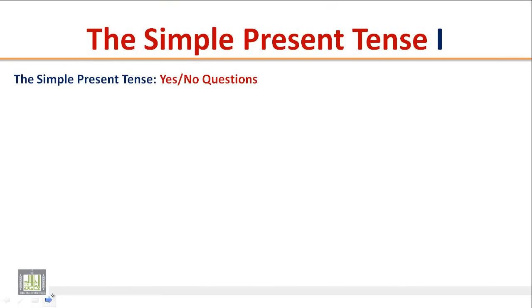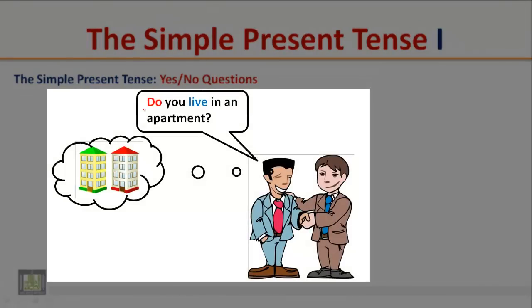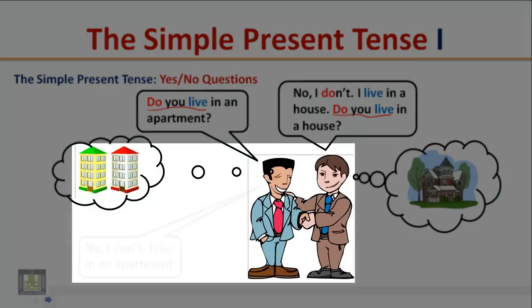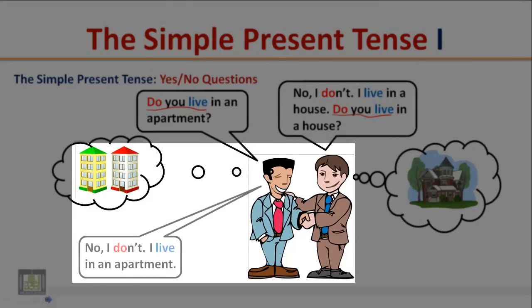The Simple Present Tense: Yes/No Questions. Listen to the following short conversation and pay attention to the word order. 'Do you live in an apartment?' 'No, I don't. I live in a house.' 'Do you live in a house?' 'No, I don't. I live in an apartment.'